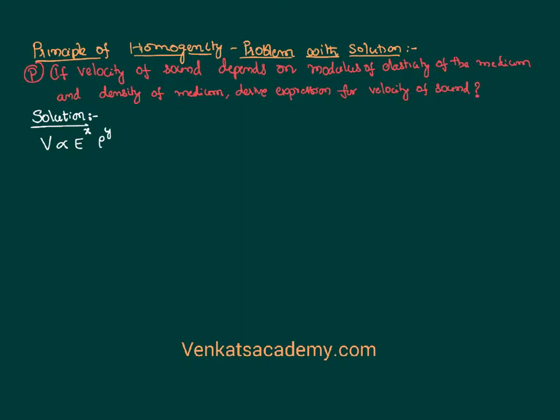The question is: what is the expression for velocity of sound in terms of E and rho? What I have written is an equation. This equation has to be dimensionally correct if it is to be correct in terms of physics. A dimensionally correct equation shall have dimensions of the left-hand side, in terms of fundamental quantities like length, mass, and time, equal to the dimensions of the right-hand side. That is called the principle of homogeneity.